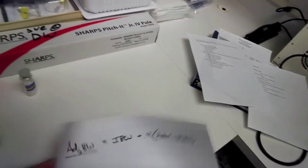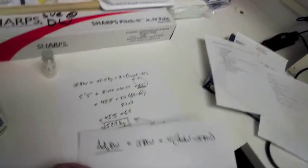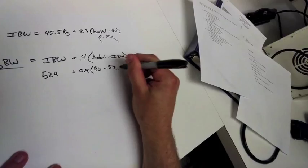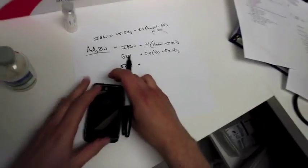You guys must use a lot of paper. This is so ridiculous — this is a lot of math. And I'm good at math, and this is a lot of math. Just keep the calculator out, probably. So all this was just to get the adjusted body weight.